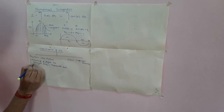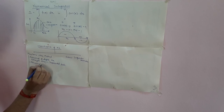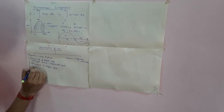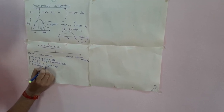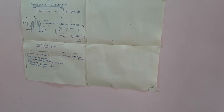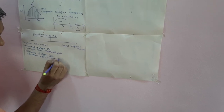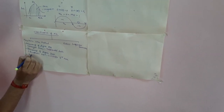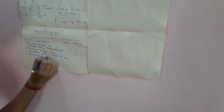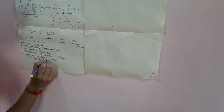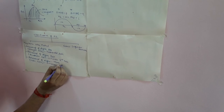The second classification: if we use a polynomial of degree 2, which is a quadratic equation in the form ax² + bx + c, then we can use Simpson's One-Third Rule. The third classification is a polynomial of degree 3, which is a cubic curve. For this type of problem we can use Simpson's Three-Eighth Rule.